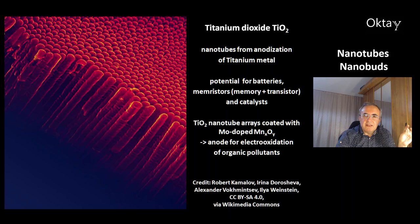This is a picture of titanium dioxide on the surface. You can make nanotubes by anodization of titanium metal at the surface. These nanotubes have potential for batteries and memristors. Memristor is a memory and transistor combination, and for catalysts. There is an interesting experiment of titanium dioxide nanotube arrays coated with molybdenum-doped manganese oxide. This gives an anode that can be used for electro-oxidation of organic pollutants.